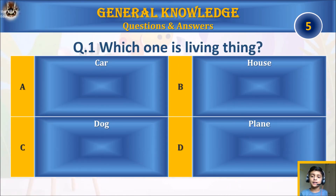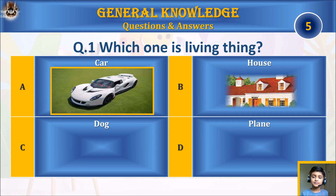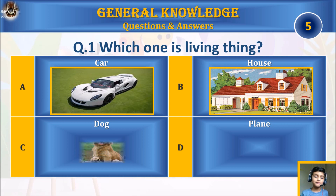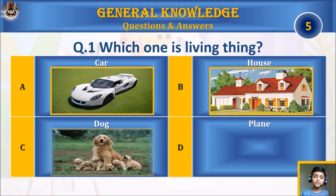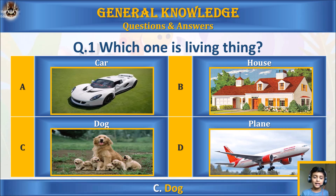Question one: which one is a living thing? A) car, B) house, C) dog, or D) plane? Your time starts. The answer is C) dog.